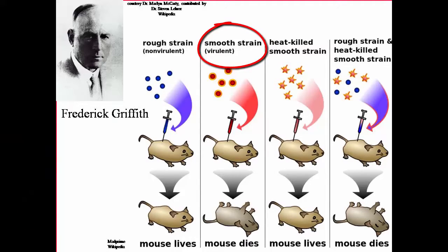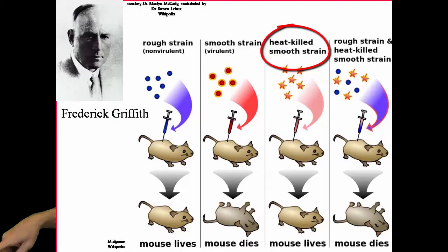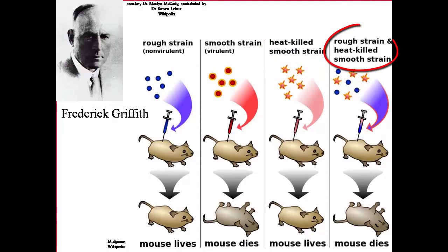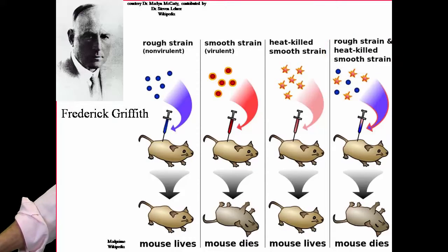And you can see in this diagram what he did. He's got a rough strain. He sees underneath the microscope that it looks like a rough surface to him. And he finds that this rough surface strain is nonvirulent. In other words, he injects a mouse with it, the mouse lives, doesn't die of pneumonia. He's got a smooth strain though, which is virulent. And if he injects this into a mouse, this smooth strain will kill the mouse.